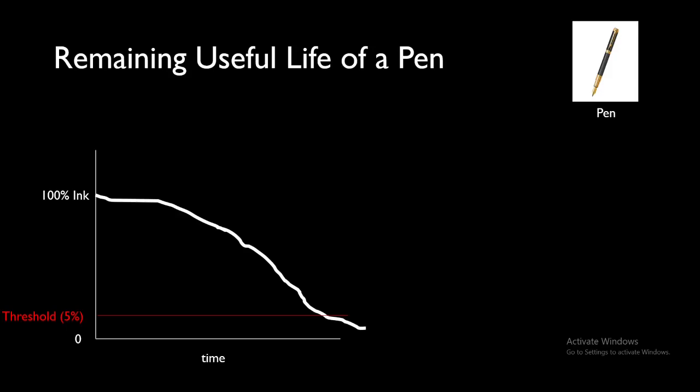That's why we set a threshold. This is the minimum threshold I take to be failure condition. After that I take the corresponding time and that corresponding time I will call end of life. When the ink percentage reaches 5%, I will call that the end of life of this particular pen.